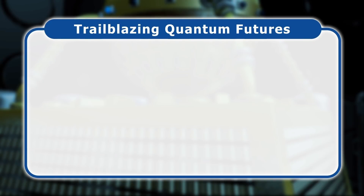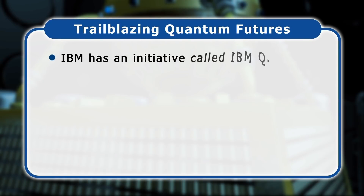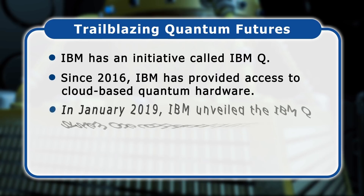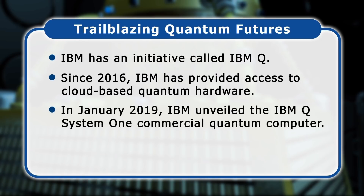One of quantum computing's trailblazers is IBM with its initiative called IBM Q. Since 2016, IBM has provided access to cloud-based quantum hardware, and in January 2019 unveiled the IBM Q System 1, which it describes as the first integrated quantum computing system for commercial use.